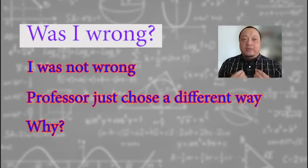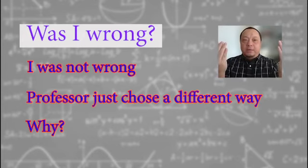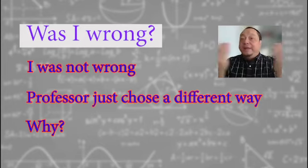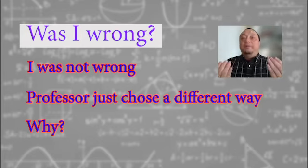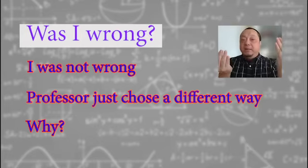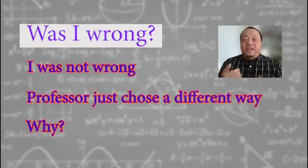If there are two different ways, A and B, why did the professor choose B and not A? Is it just random or is there a reason for it? Is there something in this particular problem that makes B better than A? These are the things worth thinking about.